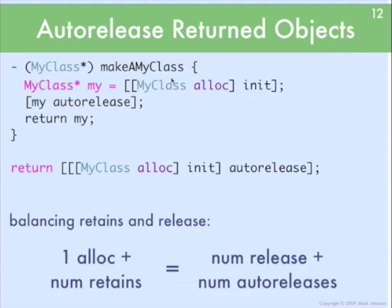Here's an example: a very simple method in MyClass called MakeMyClass — a factory method. We create a new instance of a MyClass object with alloc and init it. At that point its retain count is 1. We're going to return that object from this method, so the convention is any object returned from a method has to be in the auto-release pool. You just pass the auto-release message to that object before you return it. Doing this is so common that you'll often see programmers put it all in one line with a nested alloc-init-autorelease.